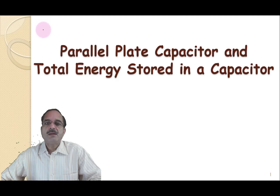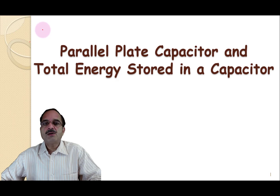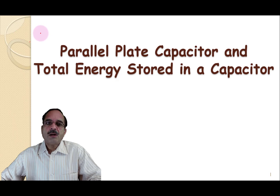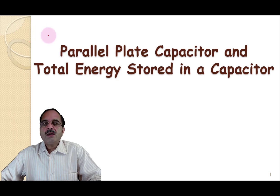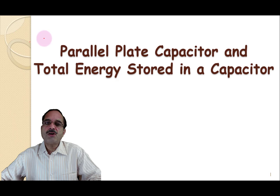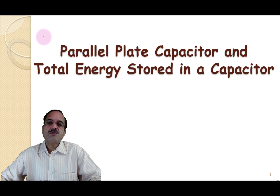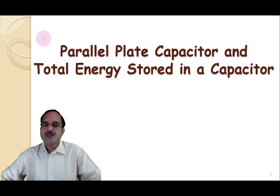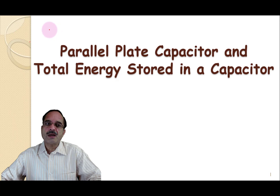We have seen the definition of capacitor, C = Q/V. How can we find out the capacitance based on the geometry of the capacitor? In this video, we will find out the capacitance of the system for parallel plate capacitors, given the area of the plate and the distance between the two conducting plates, for different types of combinations — composite capacitors. We will also find out the expression for the total energy stored in a capacitor.